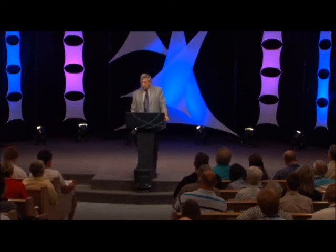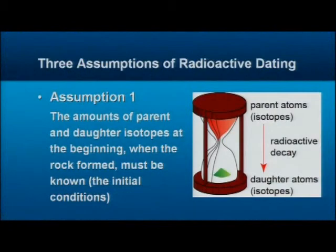The method only works if you assume three things are true. Assumption number one: the amounts of parent and daughter isotopes at the beginning, when the rock formed, must be known — in other words, the initial conditions. When you started the hourglass, you tipped it up and had everything at the top before you went off to do your job.